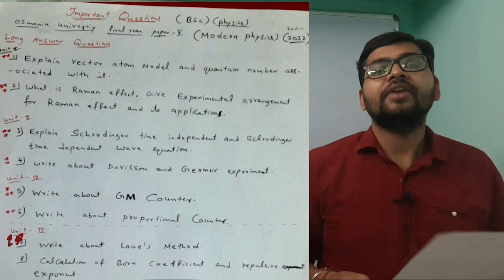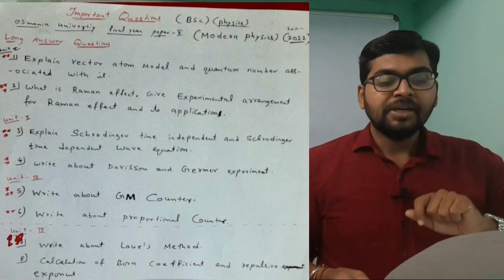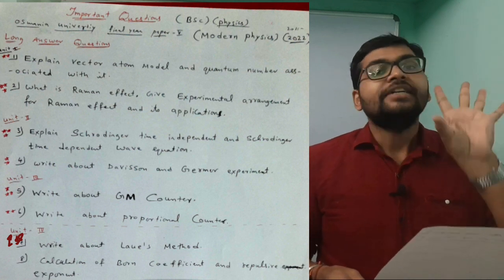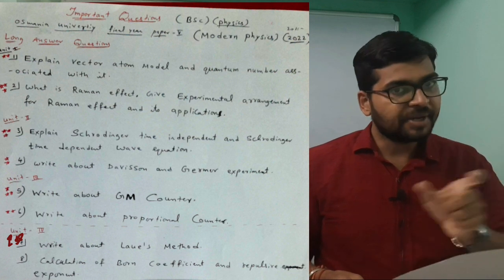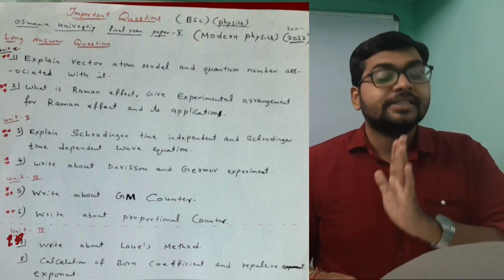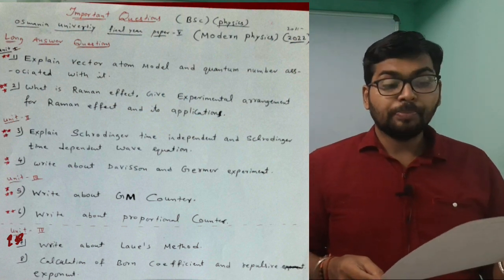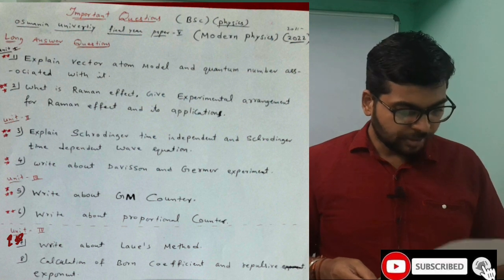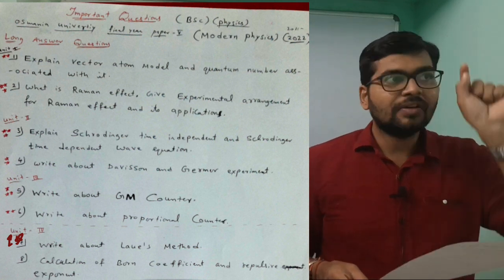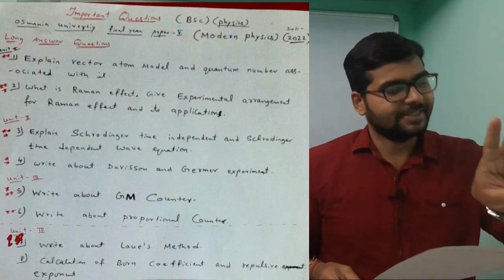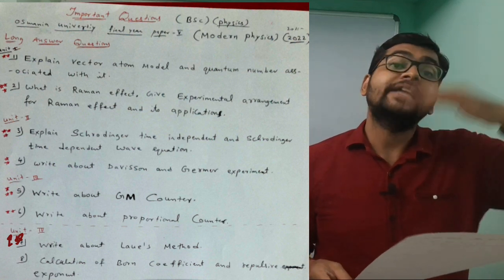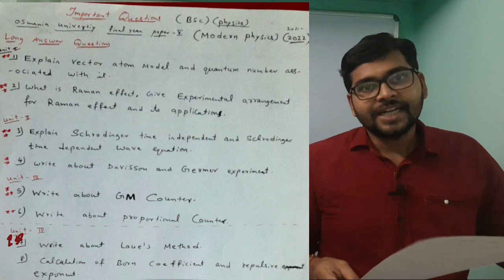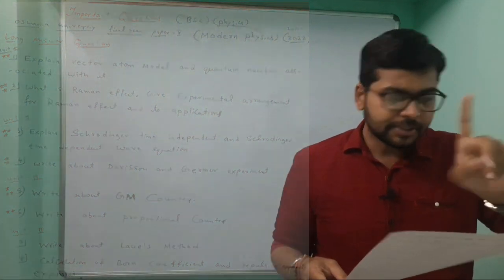Coming to third unit, write about GM counter - very very much important. For Schrödinger equations, only theory part is there. Write five times with understanding, analyzing each step, then only you can write in examination within time. Next, write about proportional counter - GM counter or proportional counter, either of this one. Fourth unit: write about Lev methods. First study third unit, then second unit, then first unit, then go back to fourth unit. In the syllabus, this fourth unit is related with solid state physics.